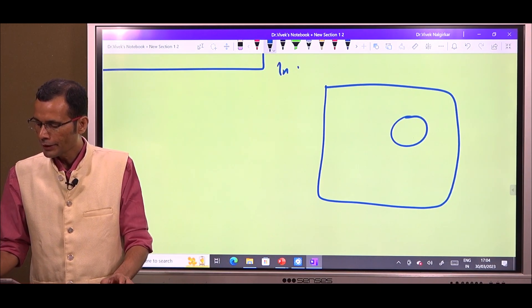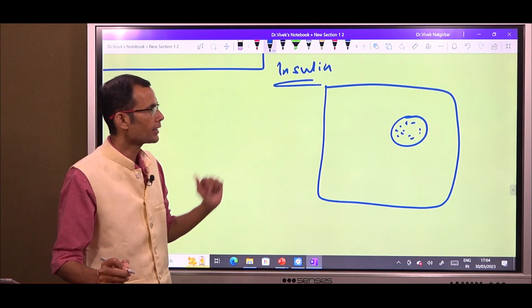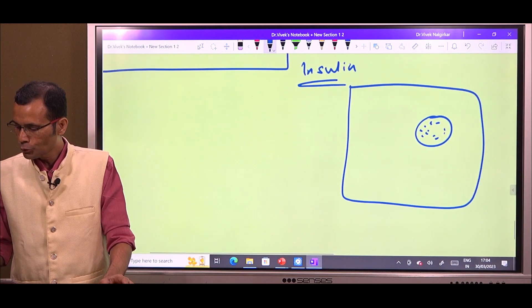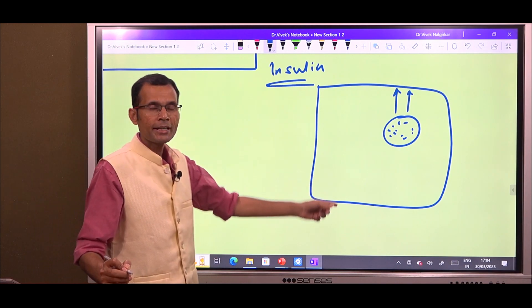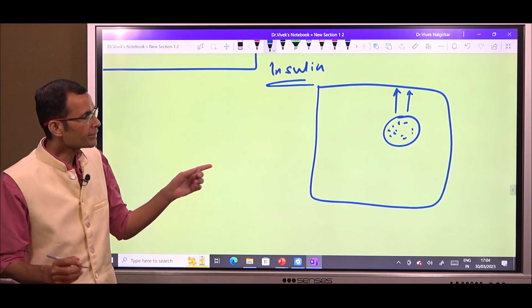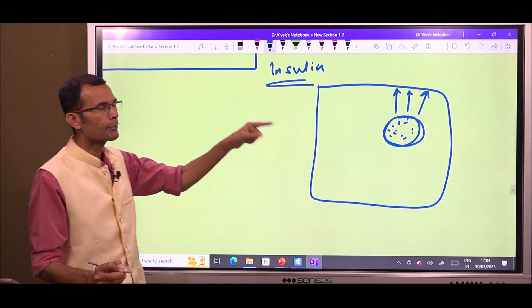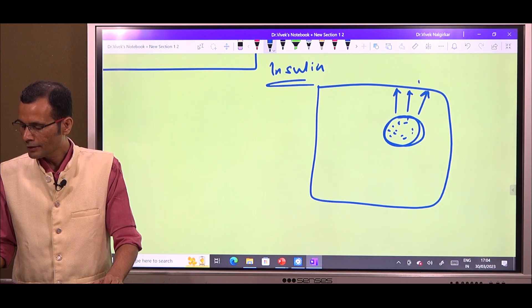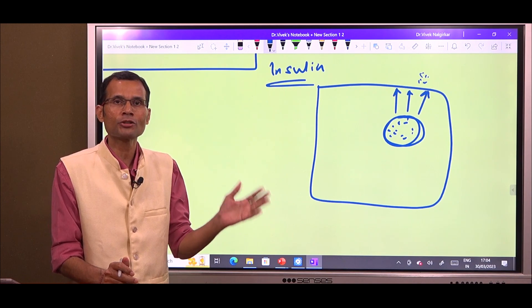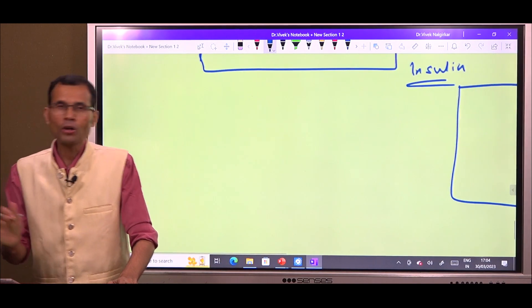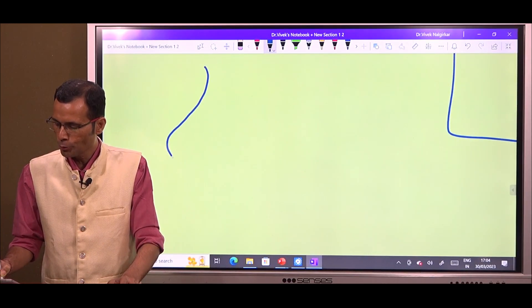For example, insulin is present inside the vesicles in pancreatic beta cells and this insulin will be released into the blood by the pancreatic beta cell by first this vesicle fusing with the membrane, cell membrane and then releasing the contents, releasing the insulin by the process of exocytosis or neurotransmitter in the synapse or in the neuromuscular junction.